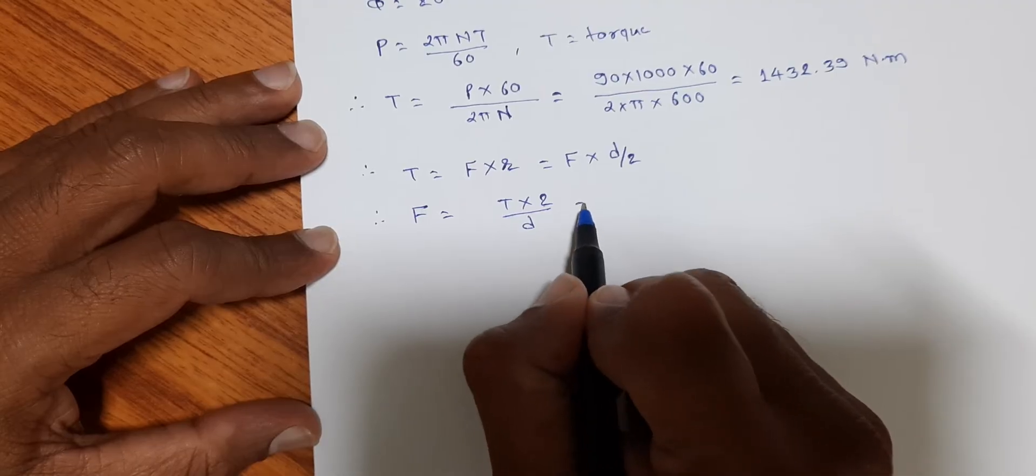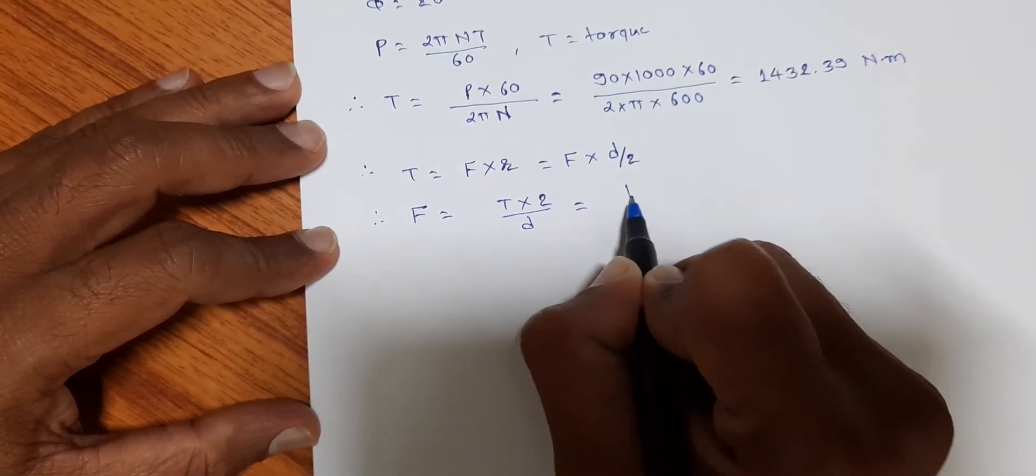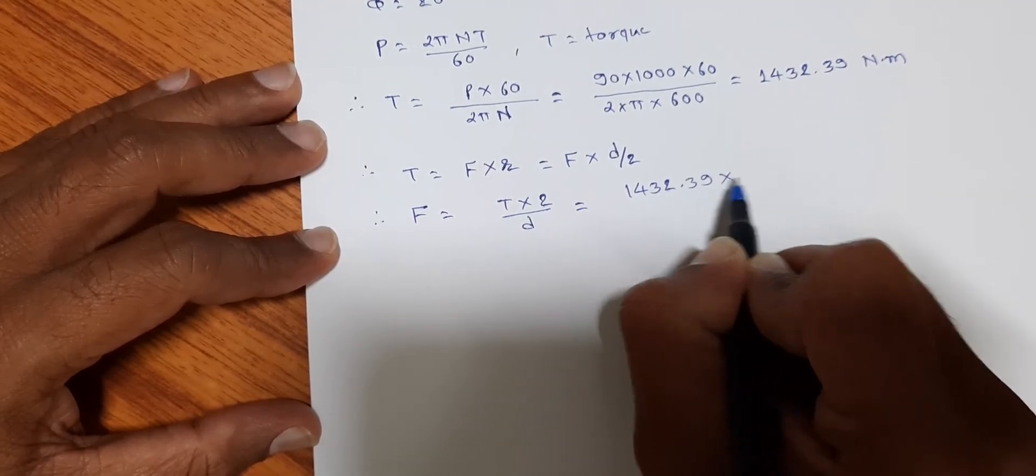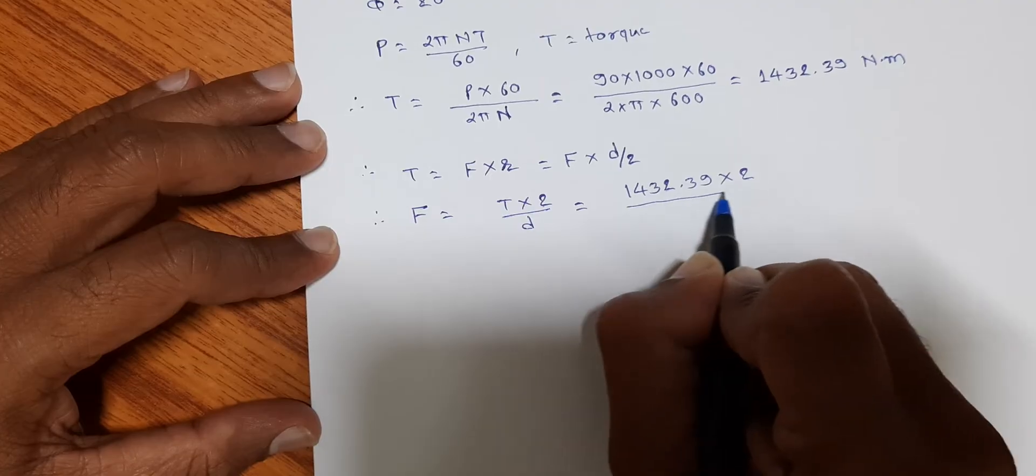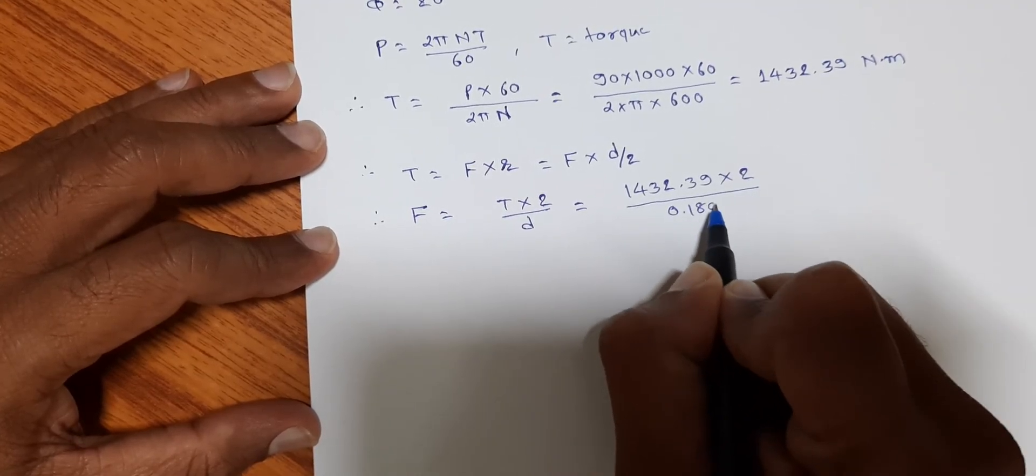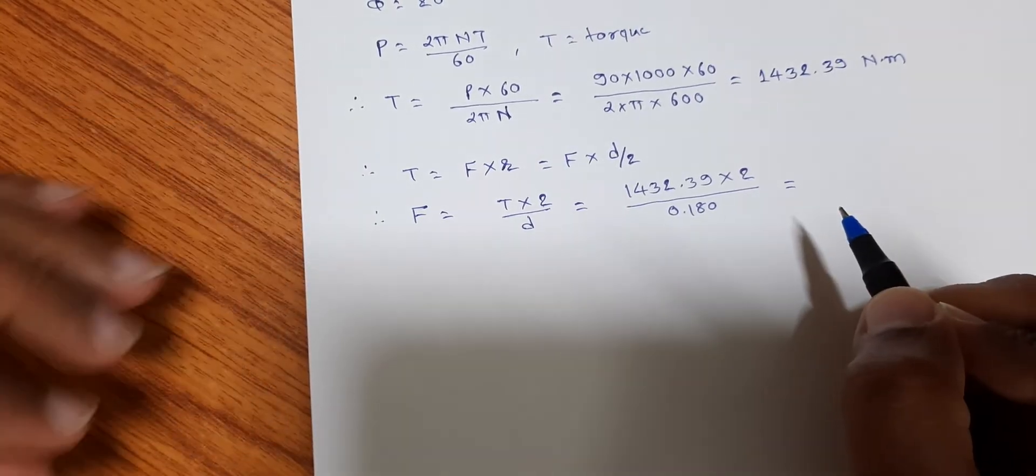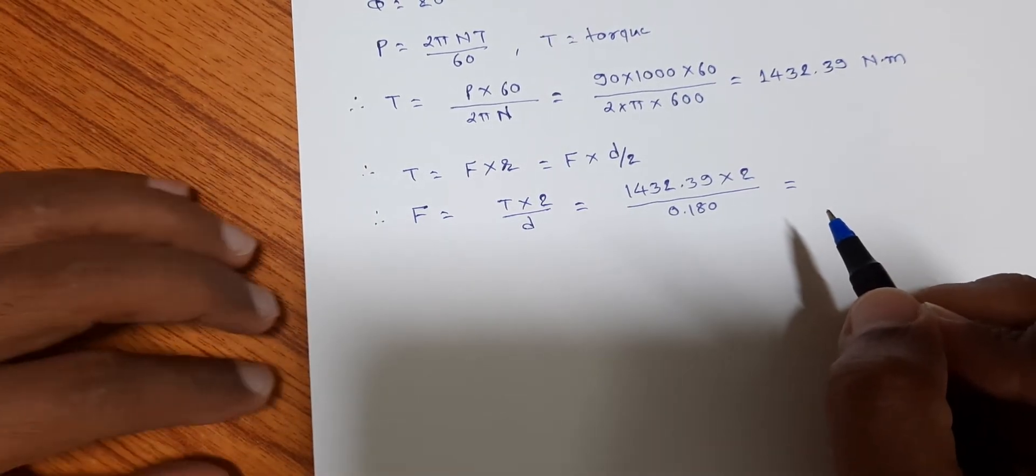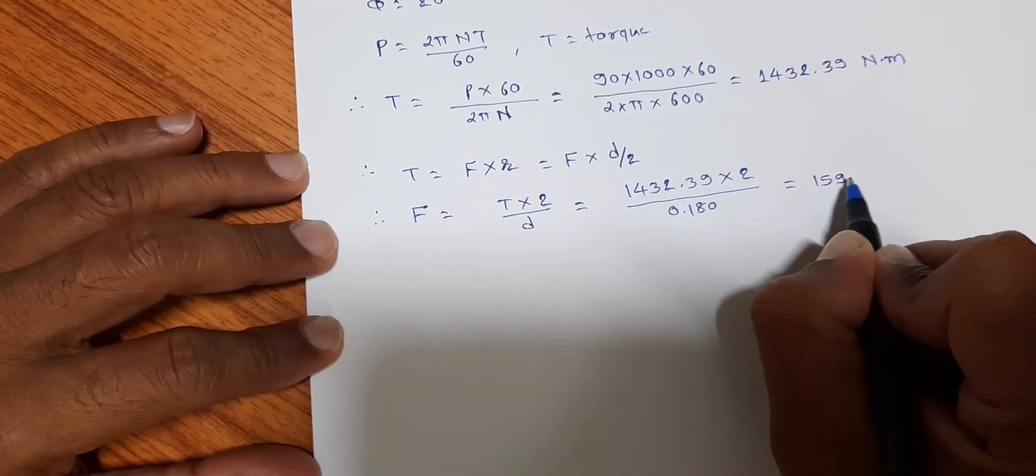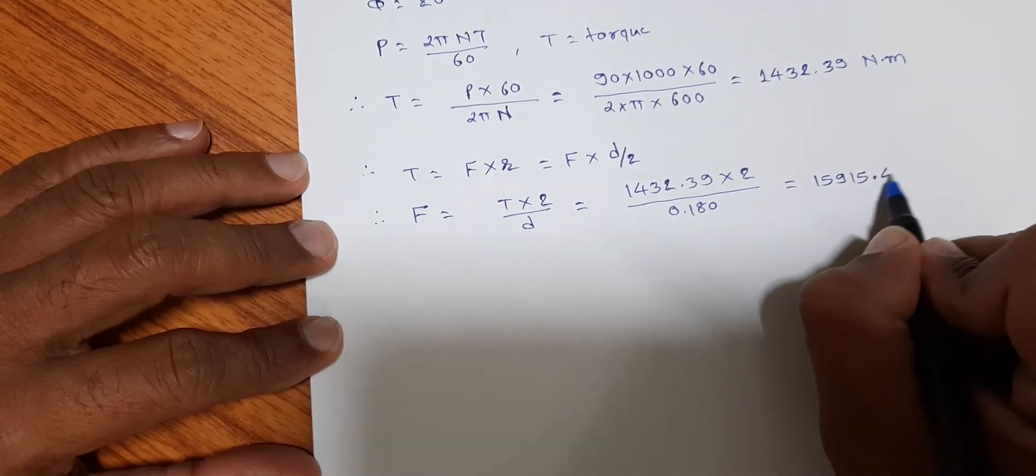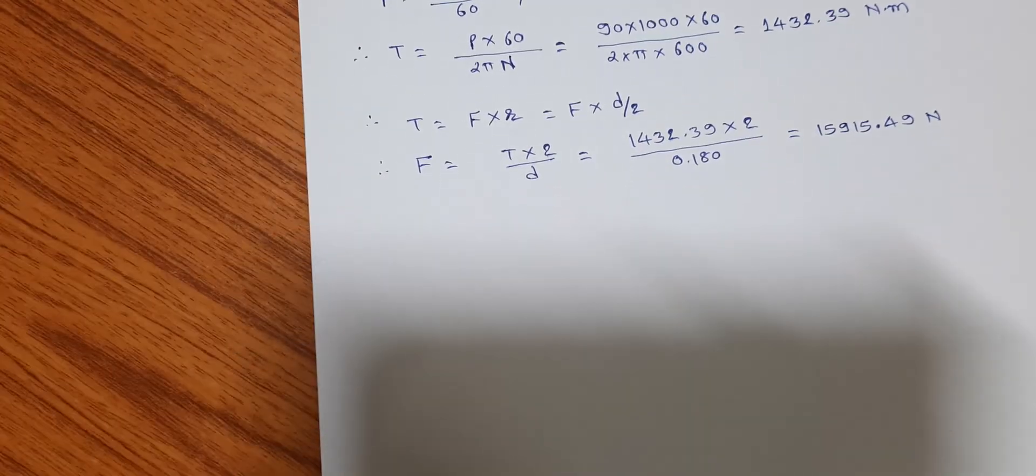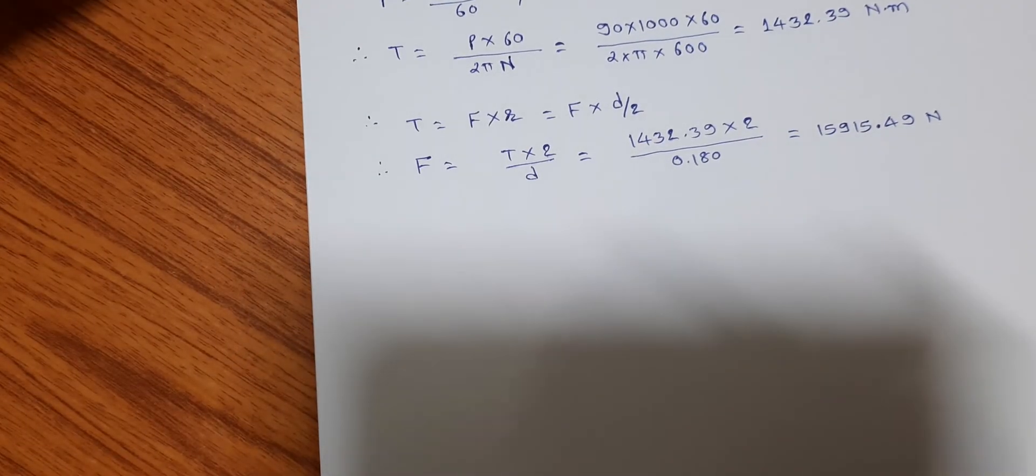Substituting the values, we found that it equals 1432.39 into 2 divided by diameter, which is equal to 0.180. On calculation, we found that the force is equal to 15915.49 newtons.